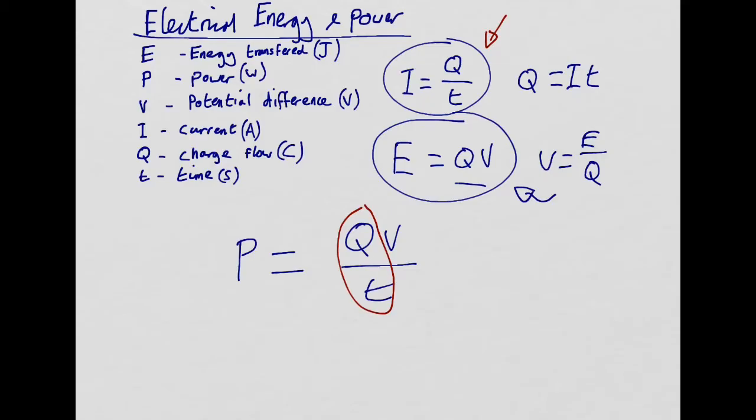Q over T gives you current. So we can replace Q over T with current. So we might end up with an equation like this. Power is equal to current times by voltage. There we are. P equals current times by voltage or potential difference. Power is I times V.